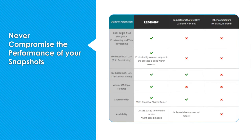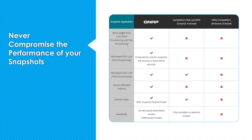In the table here, you can see how QNAP stacks up against some of the other NAS models out there. One feature that really sets QNAP apart from some of the competition is the ability to perform block-level snapshots. Taking a file-level snapshot can take a while, but when you take block-based snapshots, you'll have it done within moments. Additionally, snapshots will be available on all of our units with the new OS.